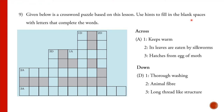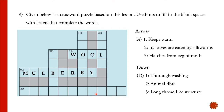Now for the crossword puzzle. For 1 Across — 'keeps warm' — the answer is wool. For 2 Across — 'its leaves are eaten by silkworms' — the answer is mulberry. For 3 Across — 'hatches from egg of moth' — it could be silkworm or caterpillar, but caterpillar fits the given column length, so we fill in caterpillar.